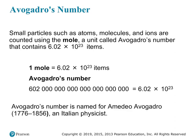The mole is also called Avogadro's number. Avogadro's number is equal to 6.02 times 10 to the 23rd items — so this could be anything you want to count. Typically, we're going to use this number to count atoms, molecules, or ions, because that's really the only situation in which we would have this many items.